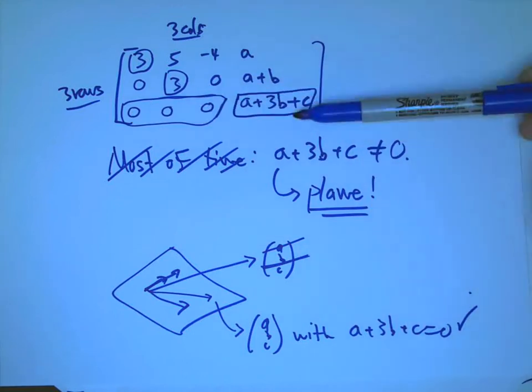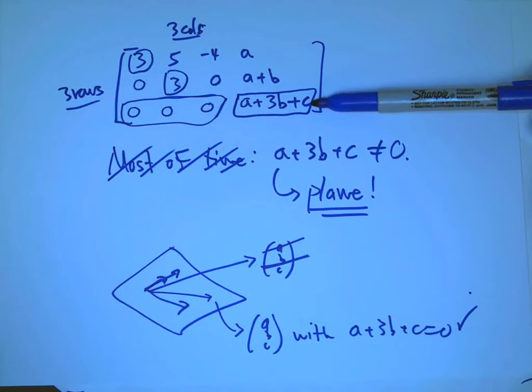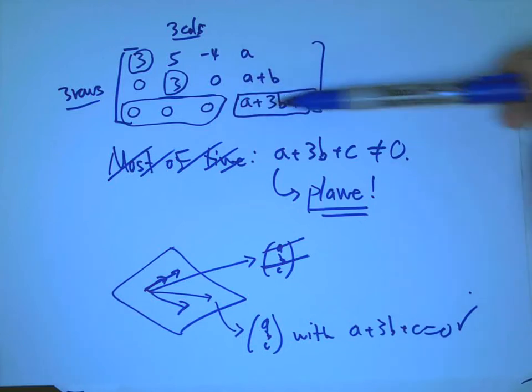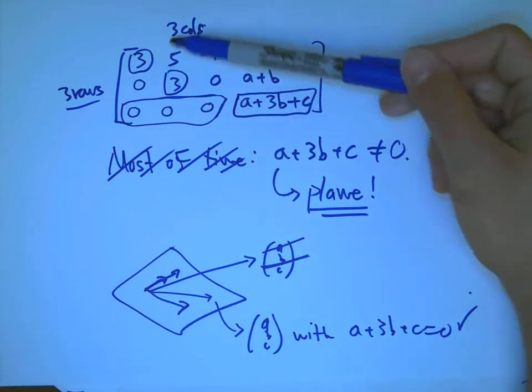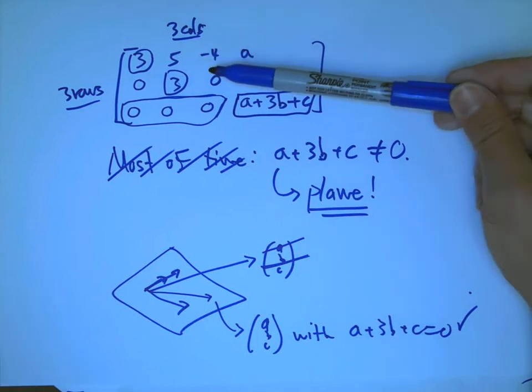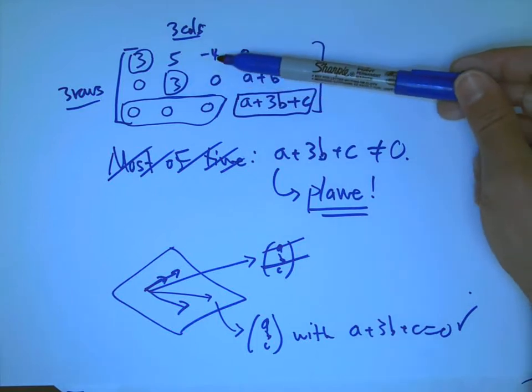The fact that I have only two pivots in two rows here is what made a row of zeros, and that's what made it not true that every W could be solved for. That's what meant that the span of these vectors, the set of vectors created out of them, is smaller than it might otherwise have been.